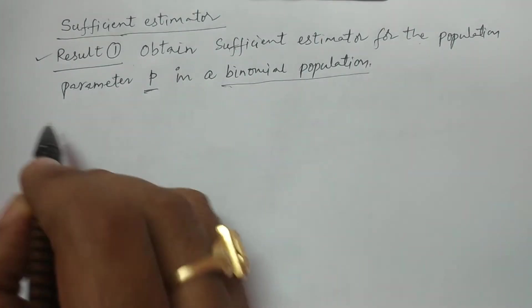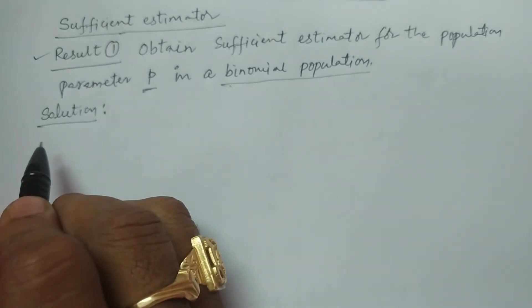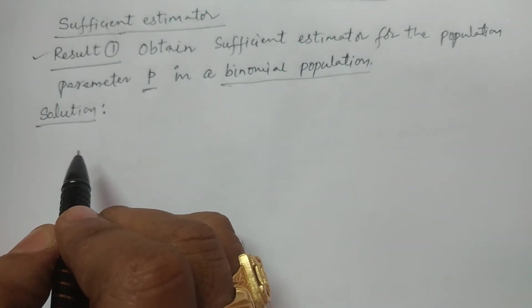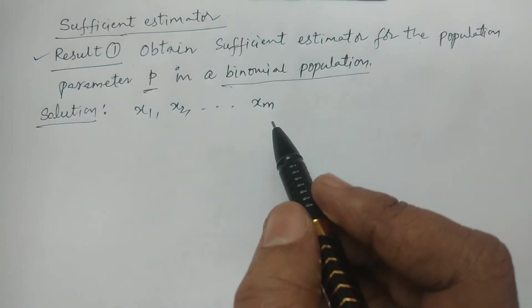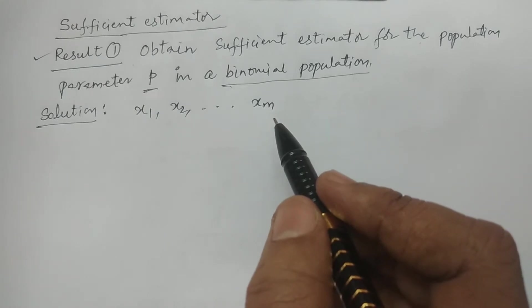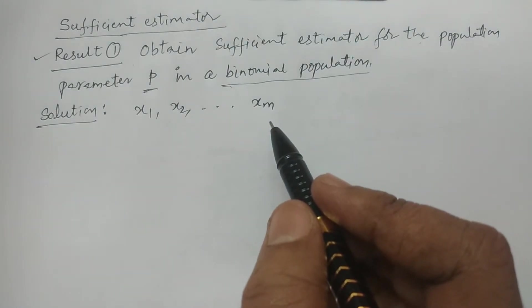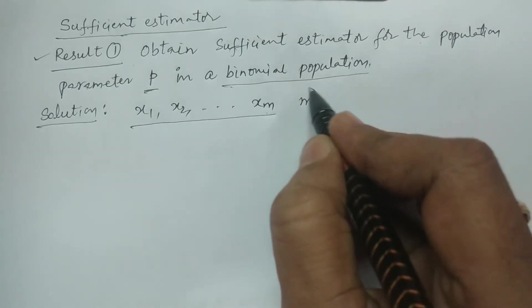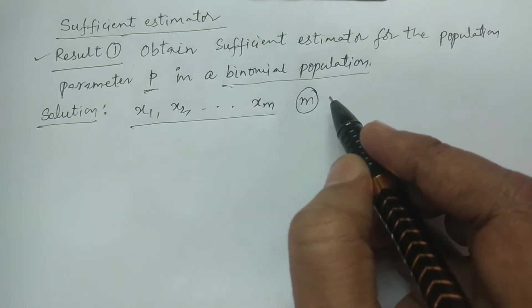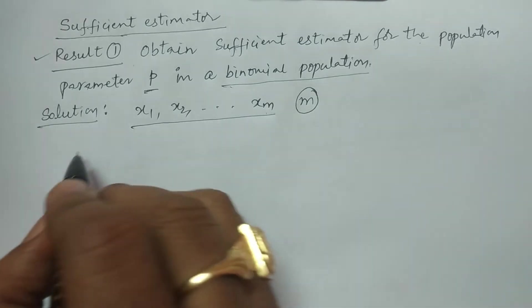The solution is going to be obtained. First of all, consider x1, x2, and so on, xm. We use m for sample size because n is one parameter of the binomial distribution: nCx * p^x * q^(n-x). So the sample size is m, drawn from a binomial population, whose density function —